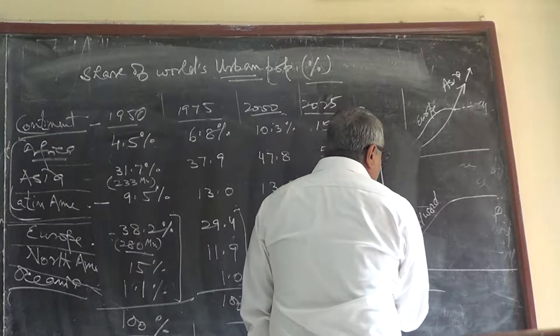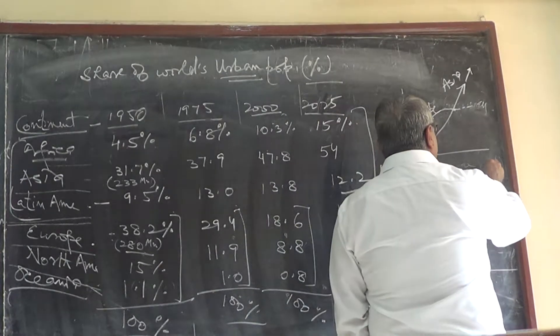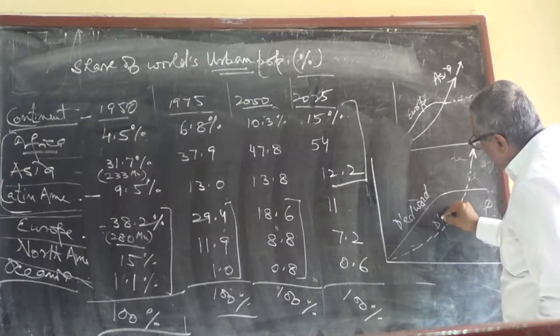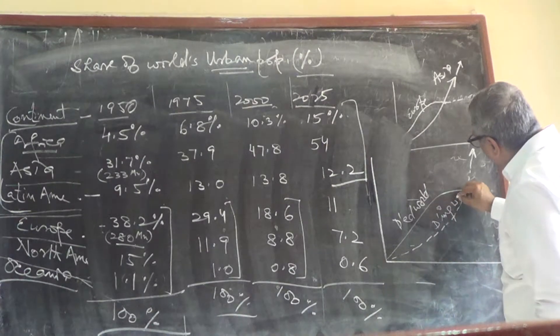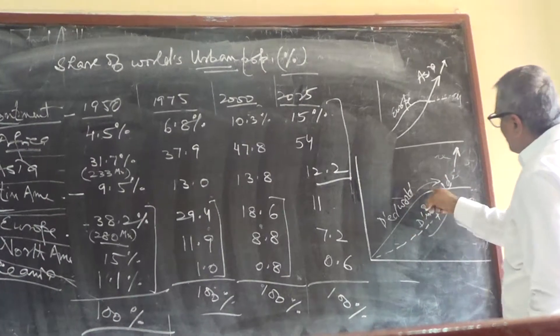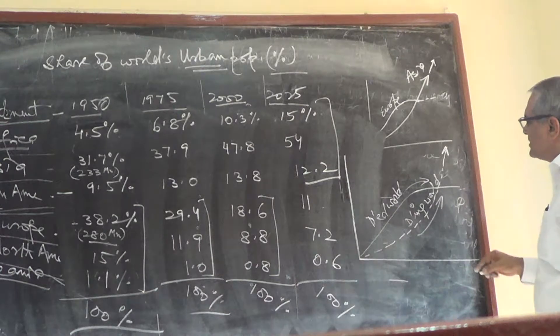And in the developing world it is like this and is still increasing. So this developing world is increasing and the developed world has stabilized. Stabilized, rather their percentage is decreasing.